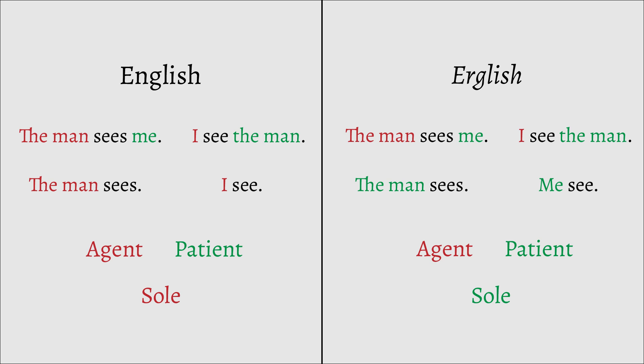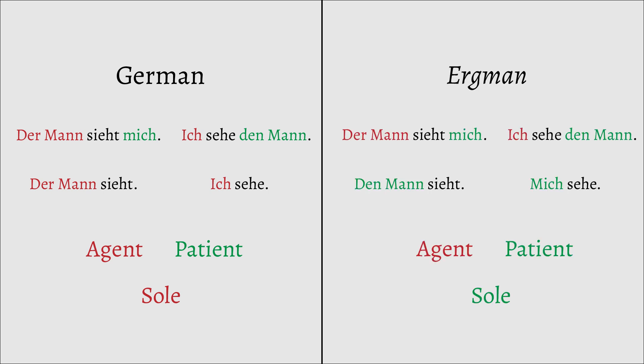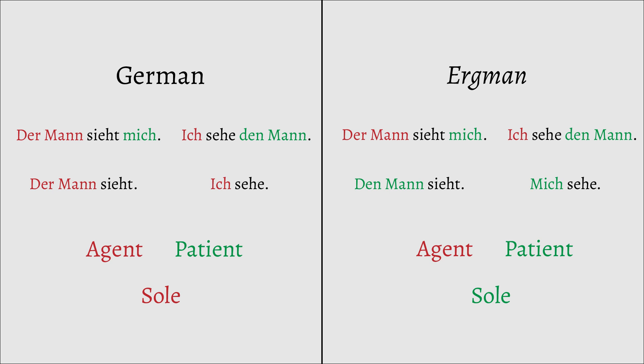Now in English, we only have case on the pronoun, so here are some German translations and Ergman translations. Notice how, just like the pronouns in the Erglish example, the subject noun of an intransitive — the sole — takes the same form as the object of a transitive, the patient, in Ergman. The subject of a transitive, the agent, is marked differently. This is an example of morphological ergativity, where only the morphology involved is affected.